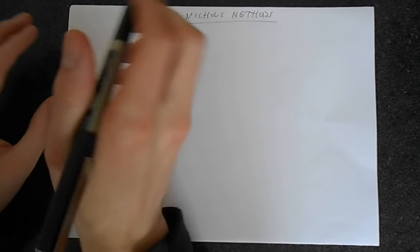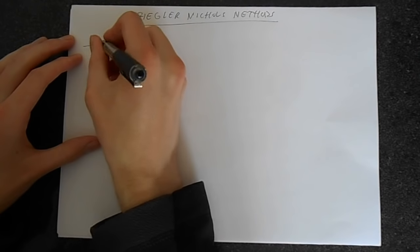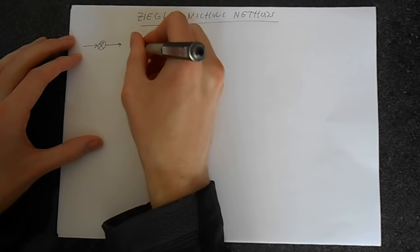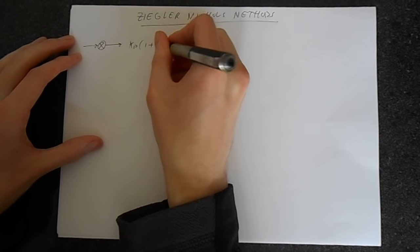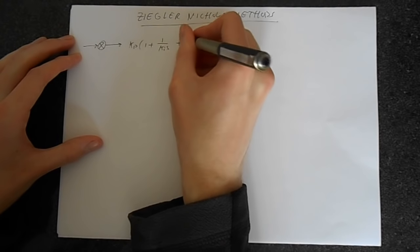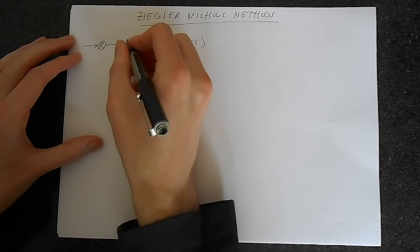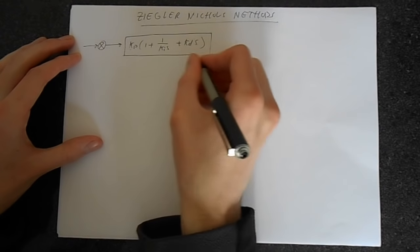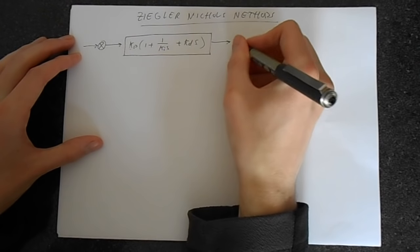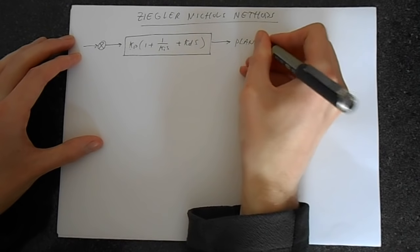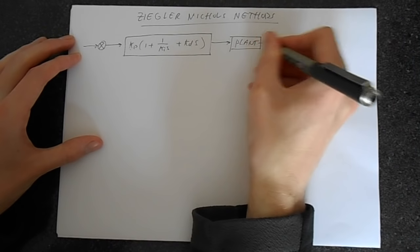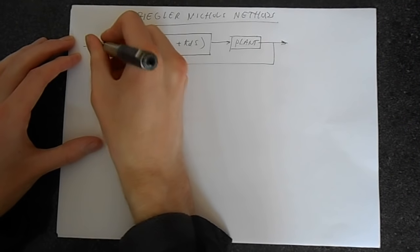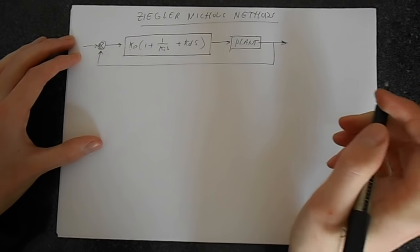Okay, so let's look at the first method. For the first method, we're going to consider this following system. We've got KP times 1 plus 1 over KI*S plus KD*S, so that's your proportional, integral, and derivative gains. And then we've got a plant here, and then let's put in some feedback going all the way back here. That's minus plus, so negative feedback.